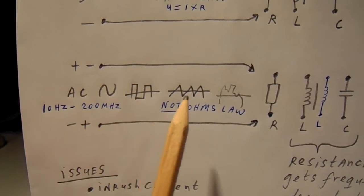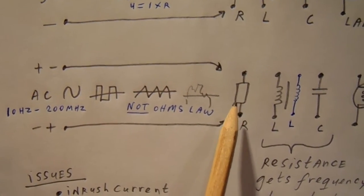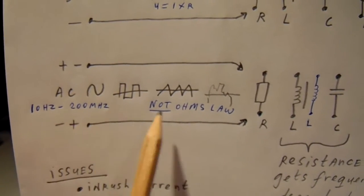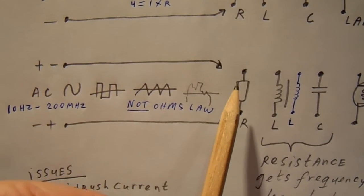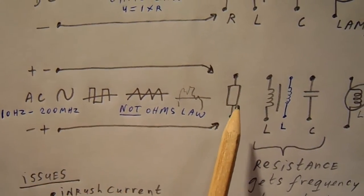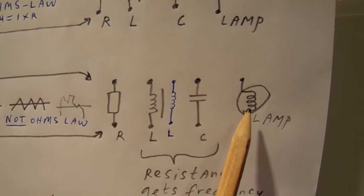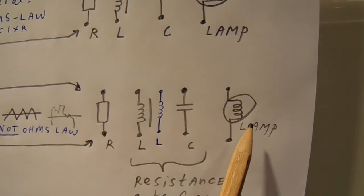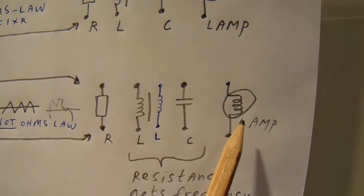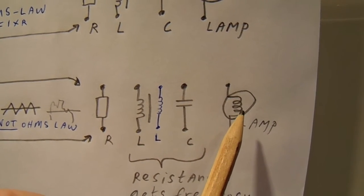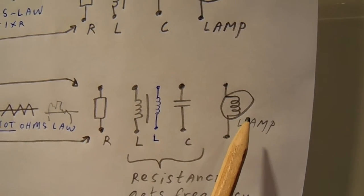So here the current and the voltage follow each other exactly. AC source. When there is a resistor here and we have AC, the current and the voltage follow each other exactly. And also with a lamp, but we have of course the resistive issue. The filament has a higher resistance.